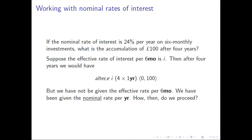Suppose the effective rate of interest per six months is i. So every six months, i is paid to us in interest. And after four years we would have alter_e(i, 4×1 year, 100 at zero). But we have not been given the effective rate of interest per six months — we have been given the nominal rate of interest per year. So how then do we proceed?